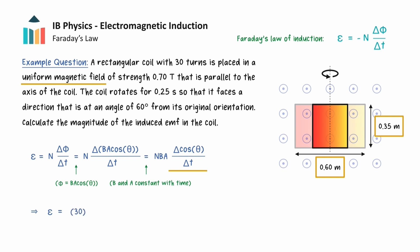The number of turns N is 30 and the magnetic flux density B is 0.7 tesla. The area of the rectangular coil is given by the product of the length 0.60 meters and width 0.35 meters. For the change in cosine theta divided by change in time term, the axis of the coil is initially parallel to the magnetic field, so theta is initially 0 degrees. It then rotates 60 degrees.